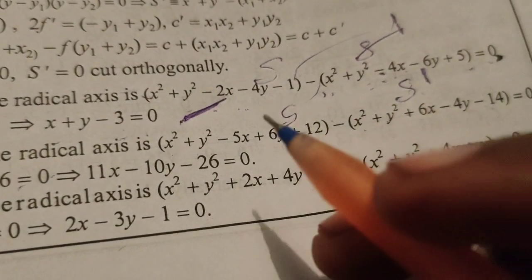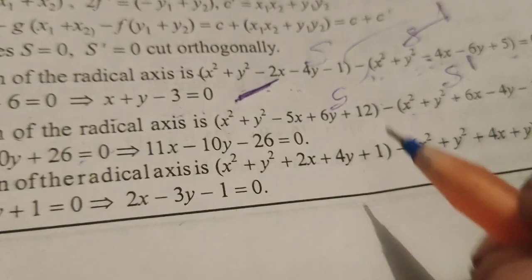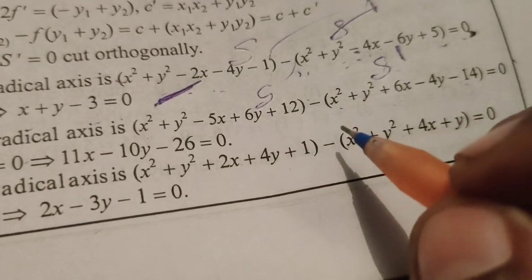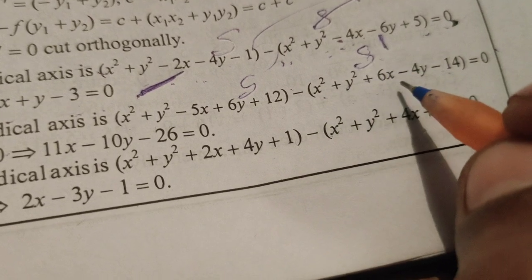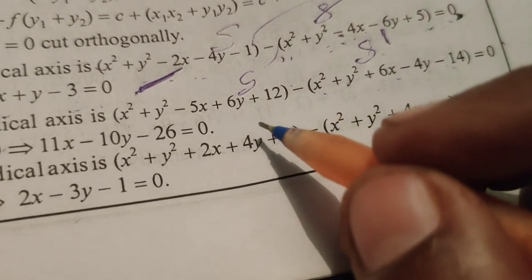Next, minus 5x minus 6x, that is minus 11x, plus 6y minus minus 4y, that is plus 10y.